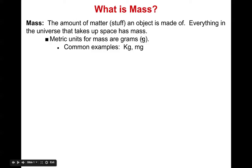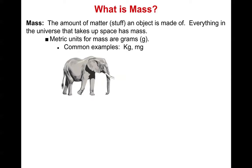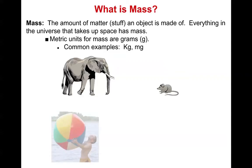If we take a look at a large object like an elephant and compare it with a smaller one like a mouse, the larger one is going to have more mass. The question is why — and it's because the elephant has more stuff in it, more mass, more matter than the mouse. However, you have to be careful because not everything that is large is going to have more matter.